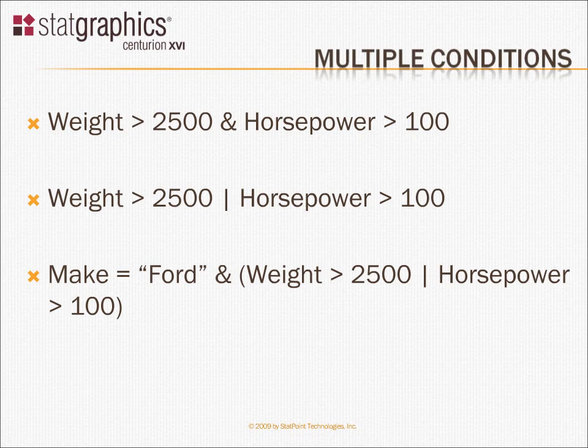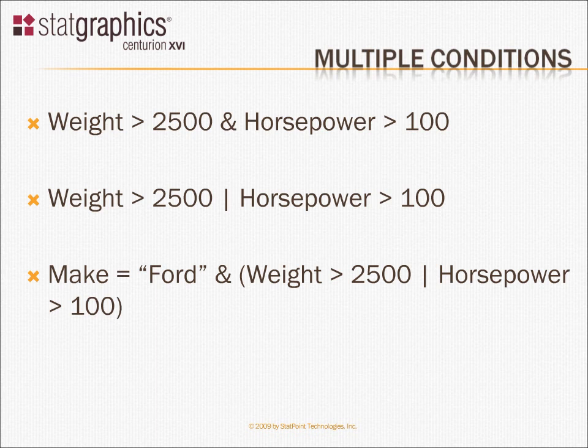If your expression gets a little complicated and you want to make sure that things are done the way you intend, you can add parentheses. For example, at the bottom, I've asked for a condition that make equals Ford — so I would get only Fords — and also that either weight was greater than 2,500 or horsepower was greater than 100. By use of these types of expressions in the select field, you can do a lot of very interesting analyses without ever disturbing your data.